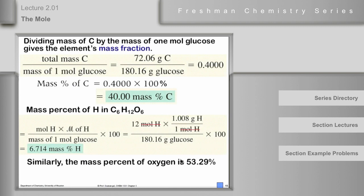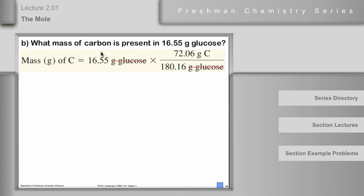The last part of the question: what mass of carbon is present in 16.55 grams of glucose? Take the mass of glucose and multiply by the mass fraction of carbon: 16.55 × (72.06 / 180) = 6.62 grams of carbon. Starting from the formula, we can calculate mass percent and convert to actual masses. This is a powerful set of tools we're developing.